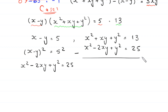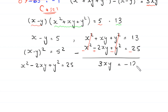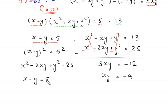We subtract the squared equation from the first equation. The x squared and y squared terms cancel out. We get 1xy plus 2xy, which becomes 3xy, equal to 13 minus 25, which is negative 12. Dividing both sides by 3 gives xy equal to negative 4. From x minus y equals 5, moving negative y to the right side gives x equal to 5 plus y.